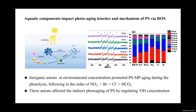In addition, water components may also impact the photo-aging kinetics and mechanism of PS via ROS. For example, inorganic anions promoted the PS aging during photodegradation, following a specific order. These anions affect the indirect photo-aging of PS by regulating hydrogen peroxide and hydroxyl radical concentration.